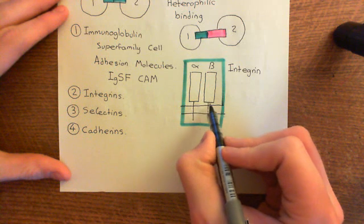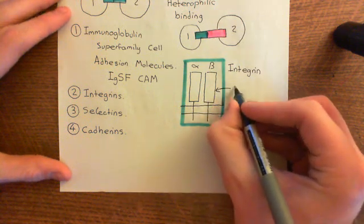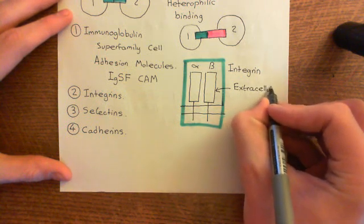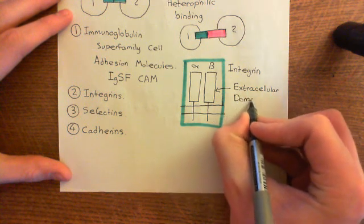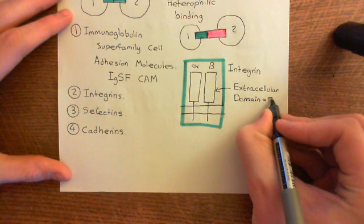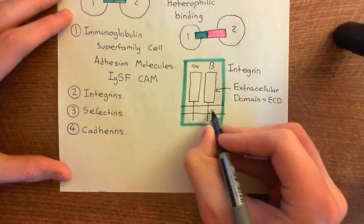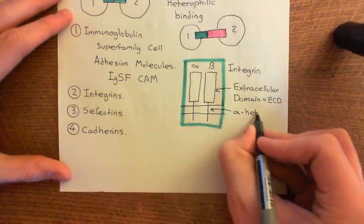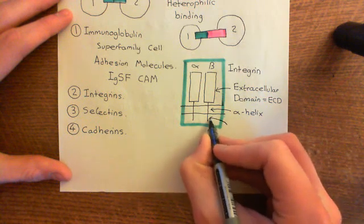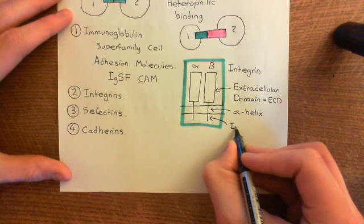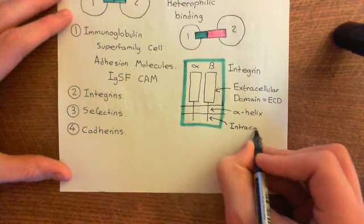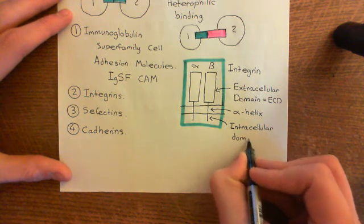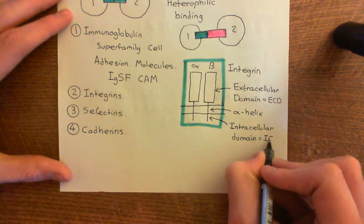Integrins have large extracellular domains, abbreviated as ECD. Underneath the ECD, you have a transmembrane region — a single membrane-spanning alpha helix. Then you have a very short intracellular domain, abbreviated ICD, which is a very small cytoplasmic domain.